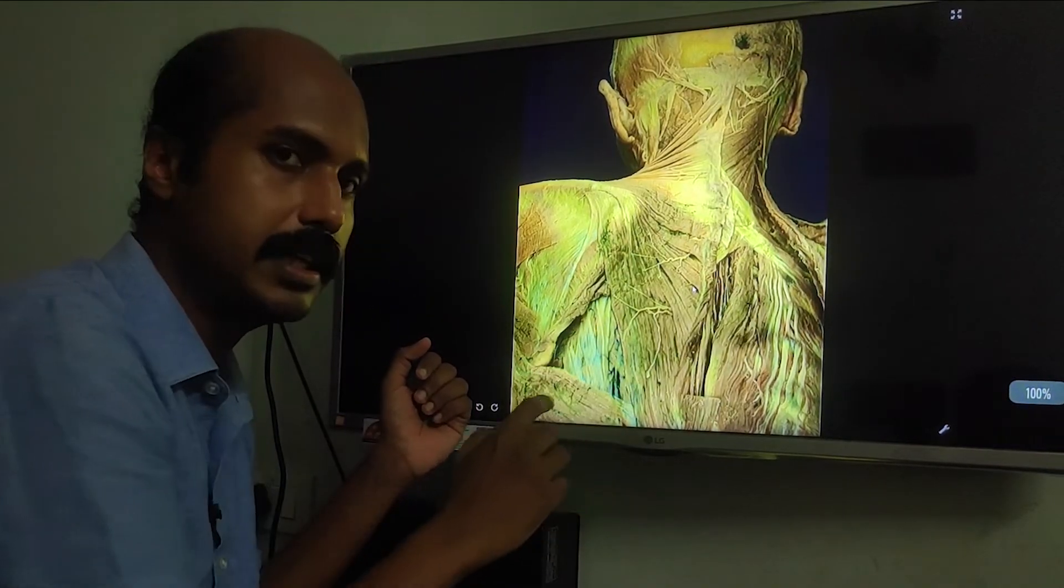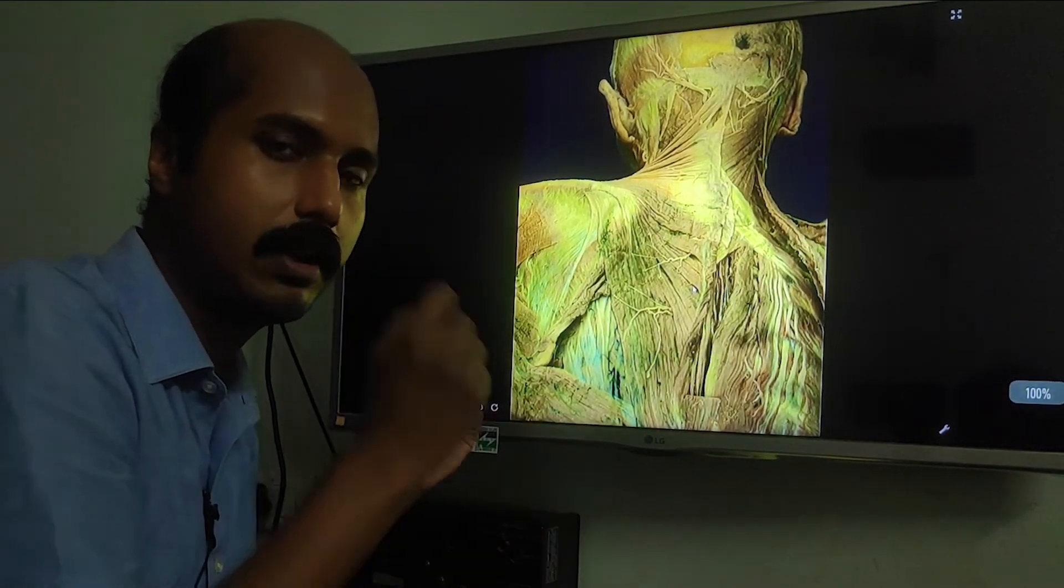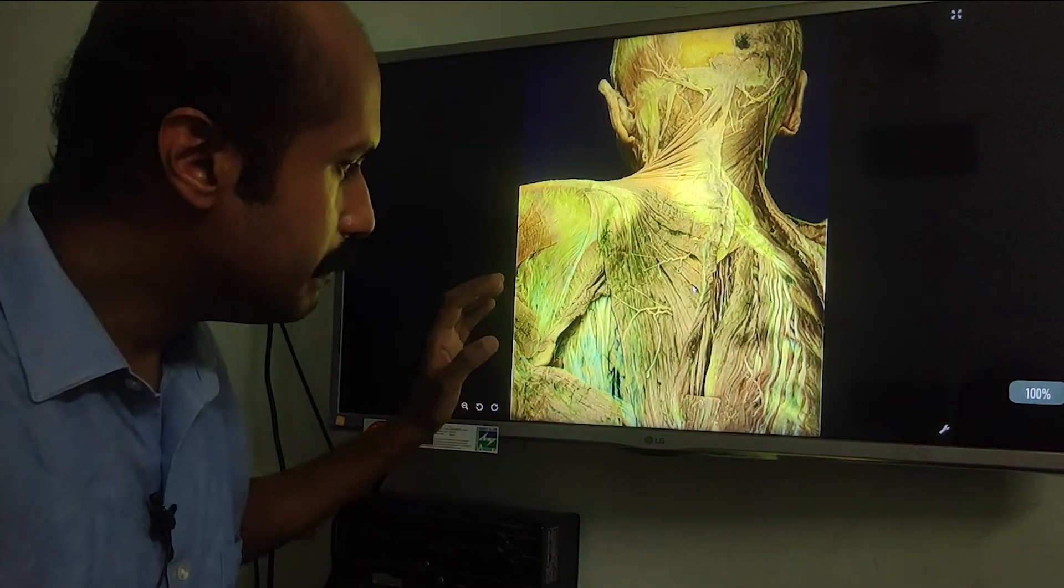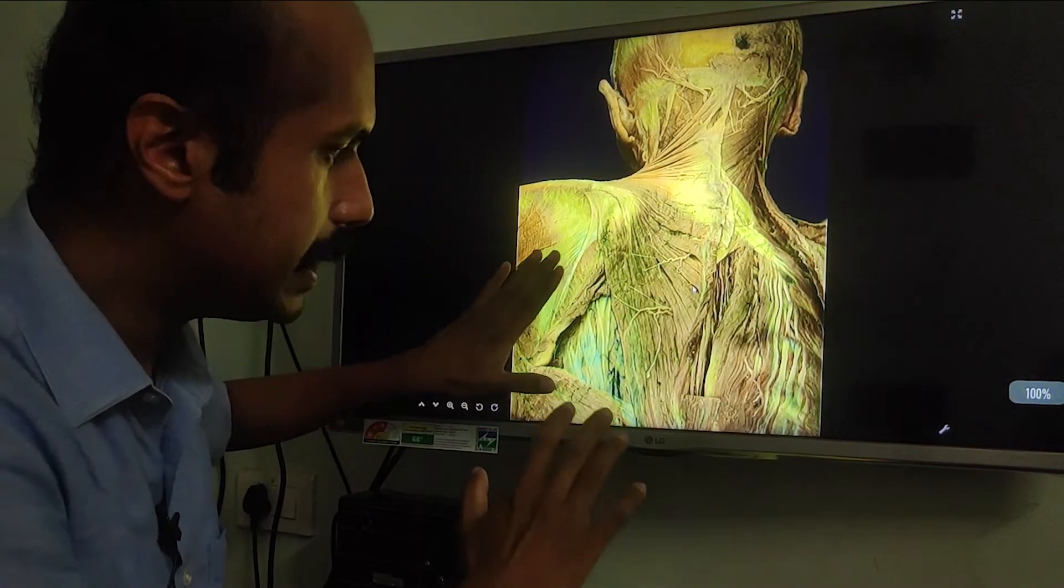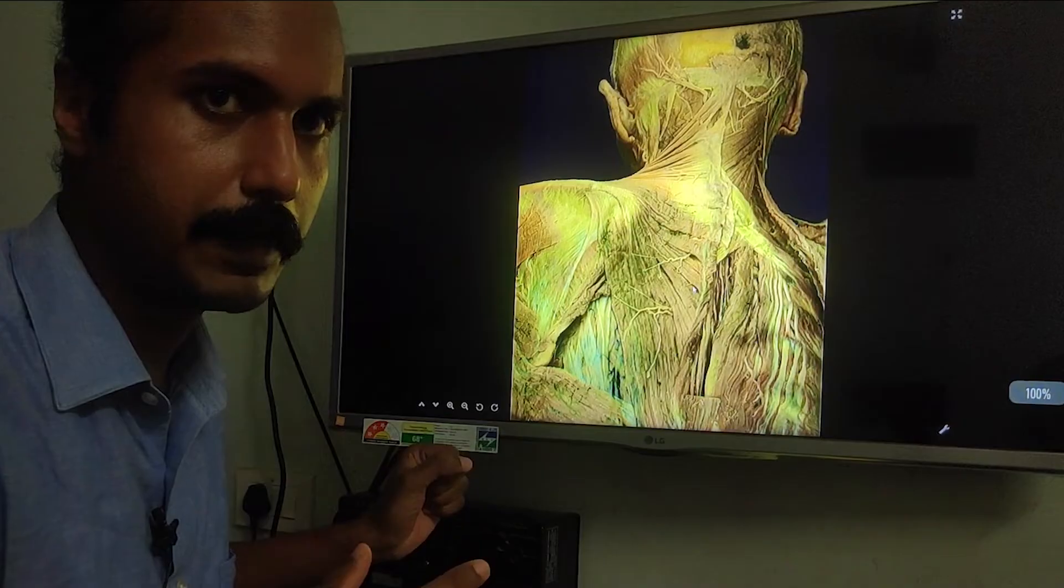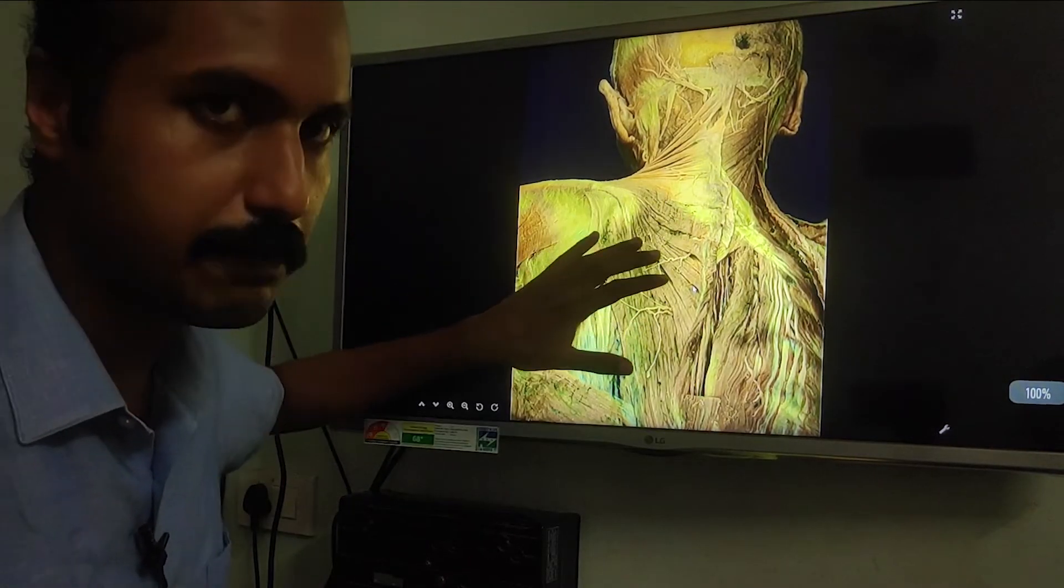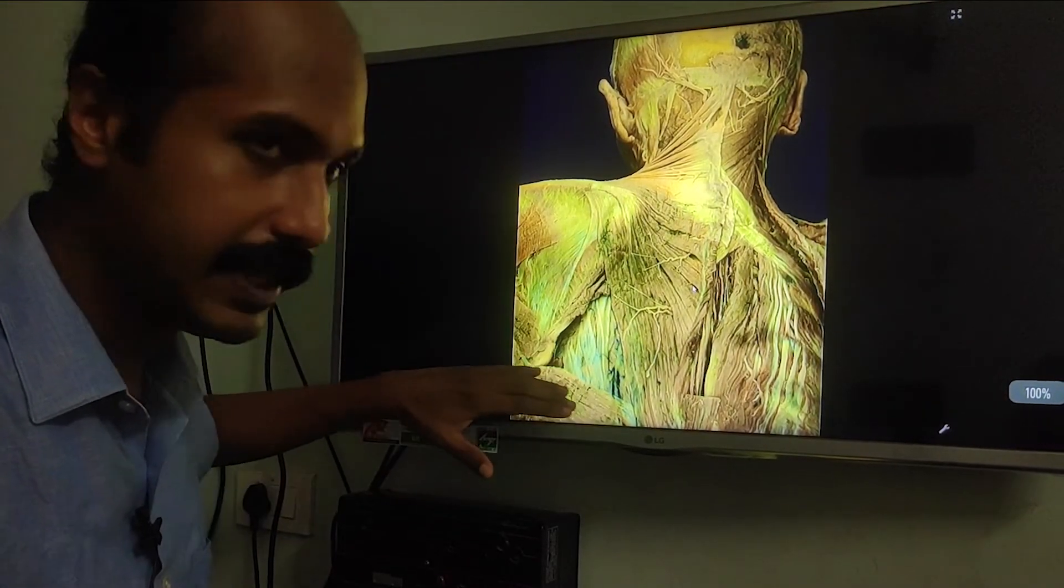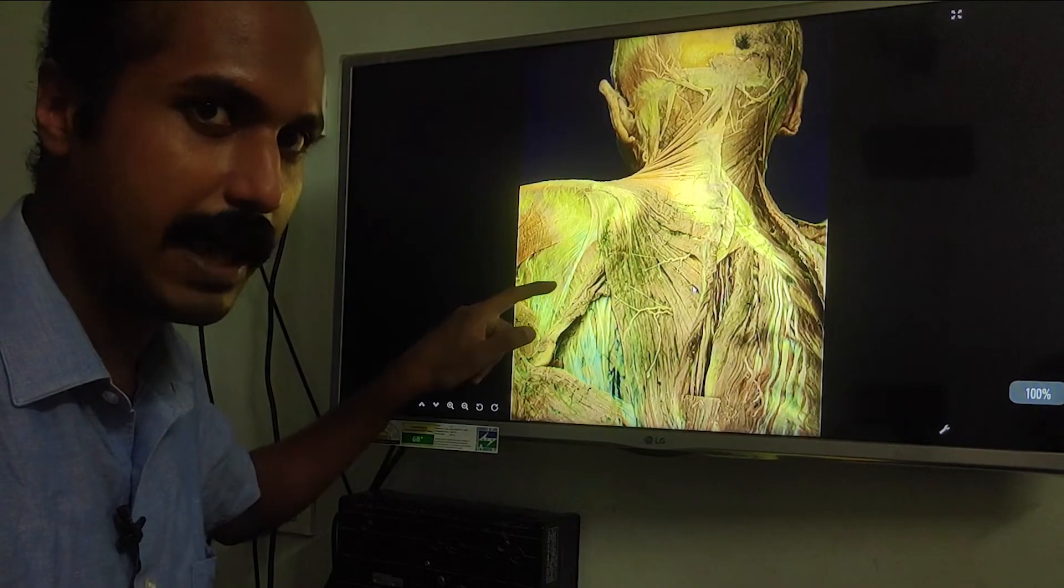The triangle of auscultation is one of the best areas where you can auscultate the lung sounds. The importance of this is that you can actually manipulate this triangle in a person. You cannot change the position of trapezius or latissimus dorsi, but you can change the position of the scapula.